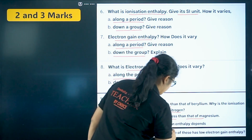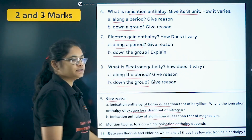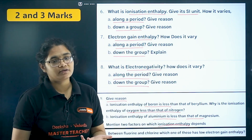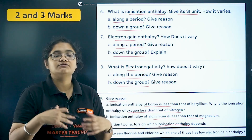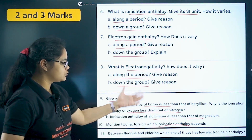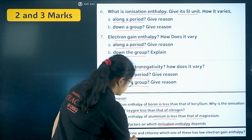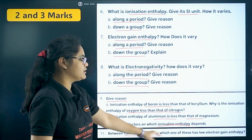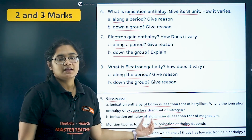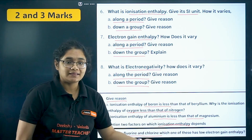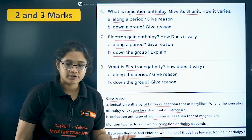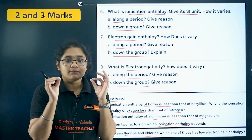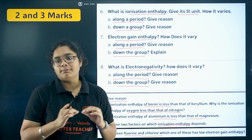Mention two factors on which ionization enthalpy depends — you can write any two factors like electronic configuration, distance from the nucleus, nuclear size, and so on. Next, a very important question: between fluorine and chlorine, which has lower electron gain enthalpy? Fluorine has lower electron gain enthalpy, and the reason is its smaller size and more inter-electronic repulsions.